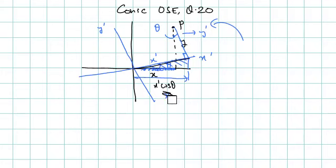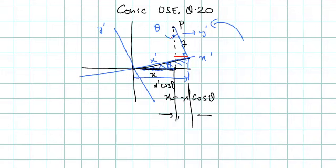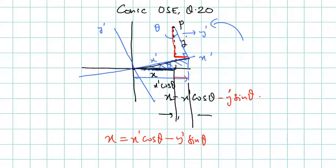So X equals X dash cos theta minus this part. To find this part: in this triangle, this angle is theta and hypotenuse is Y dash, so it is Y dash sin theta. Therefore X equals X dash cos theta minus Y dash sin theta. Writing it here: X equals X dash cos theta minus Y dash sin theta.